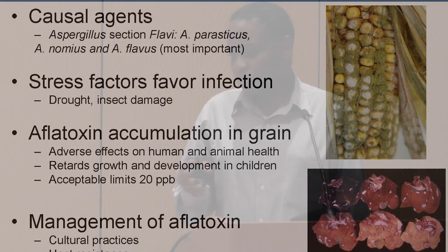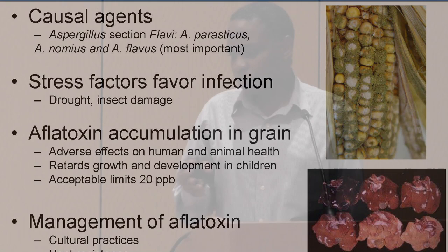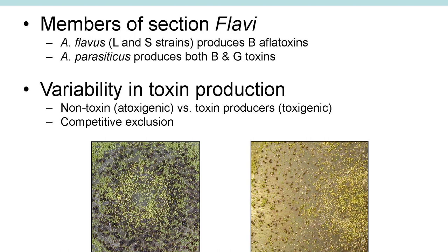Aflatoxin contamination of corn is caused by Aspergillus section flavi, of which A. flavus is one of them. You have A. parasiticus, A. nomius, and others. But of these, the most important ones appear to be A. nomius and A. parasiticus. This is just a picture showing how moldy corn can look.